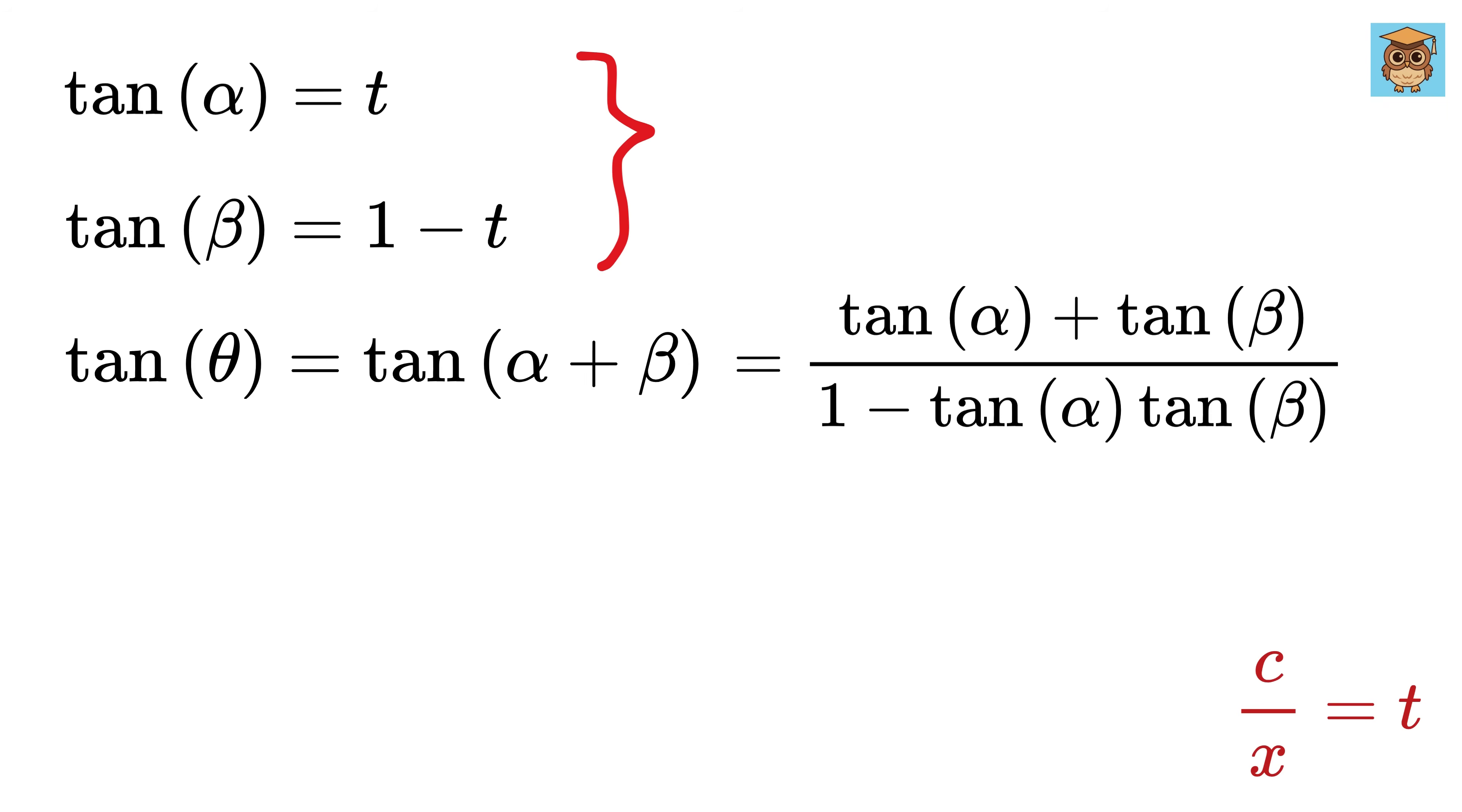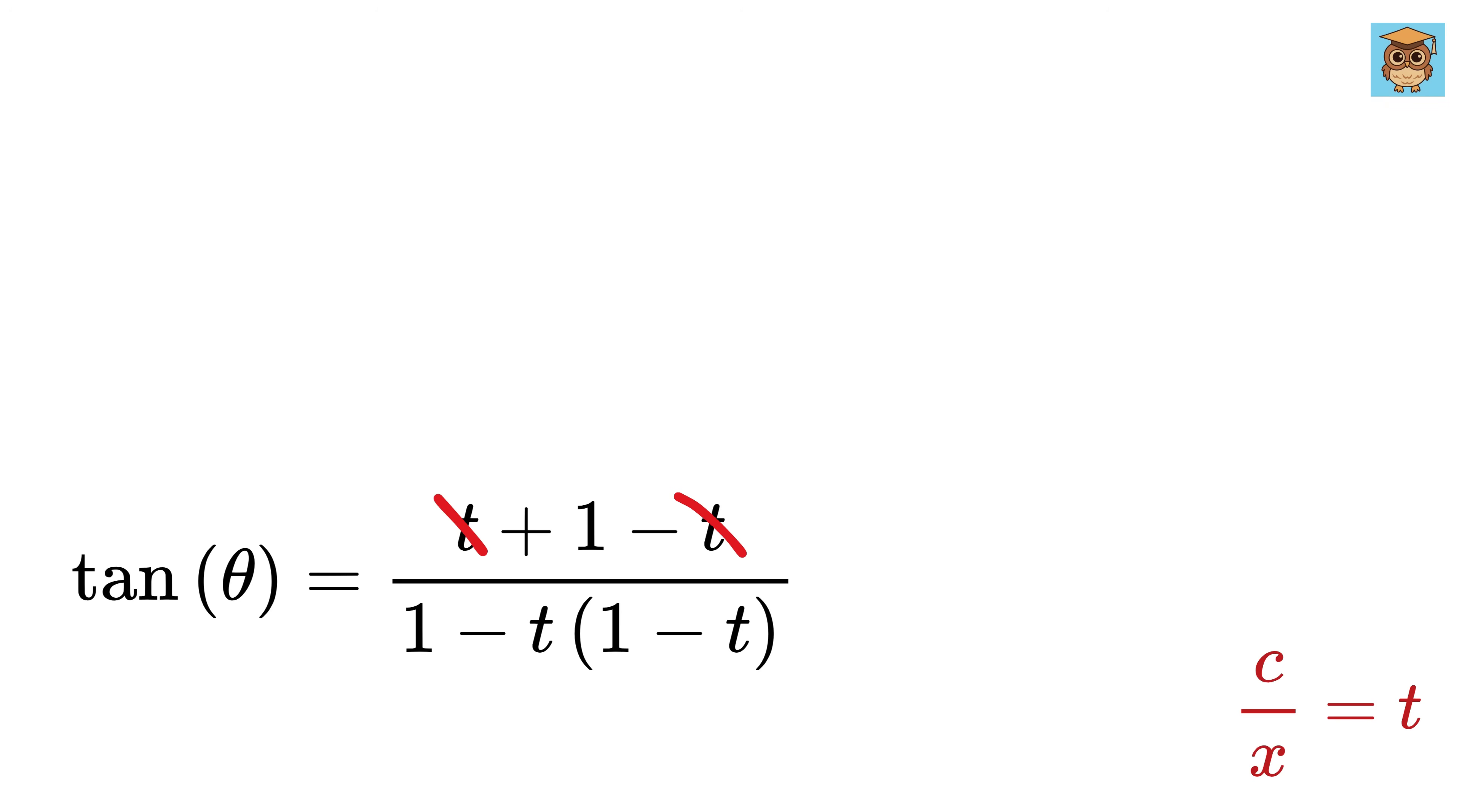So using this for alpha and beta, we get tan of theta equals t plus 1 minus t divided by 1 minus t times 1 minus t. This will be cancelled and we get 1 in the numerator. Now t times 1 minus t is t minus t squared. So the denominator becomes 1 minus t plus t squared. This way we have found the function of theta in terms of a single variable t.